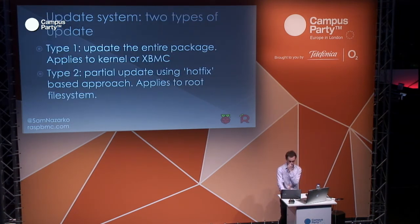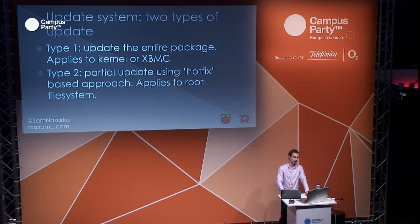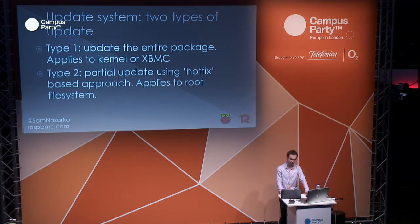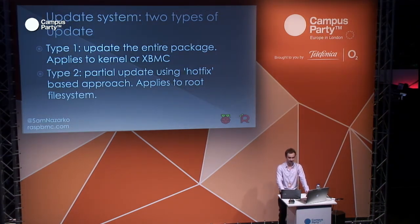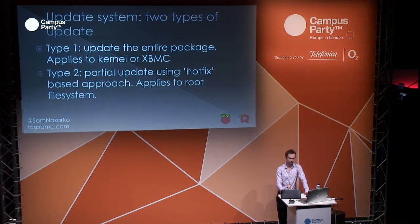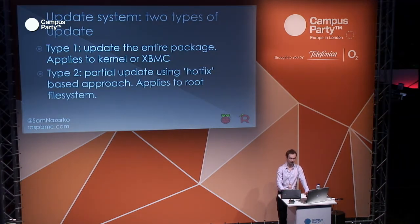There are two types of update: we either update the entire package — for example the kernel or XBMC — or we touch files on the file system as a form of versioning. For example, you can download a new kernel at 20 megabytes, but you can't download a new root file system because the user might have made customizations, it's mounted, and it would take too long. So we mark changes to it, and in future builds of that file system we also create that file, so the update system knows not to reapply that update as it's already been installed.